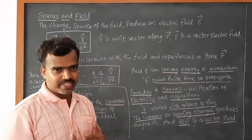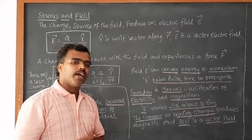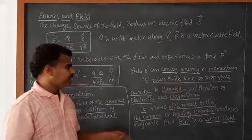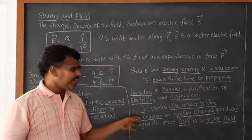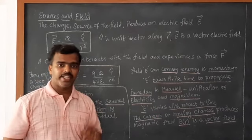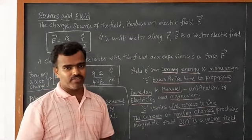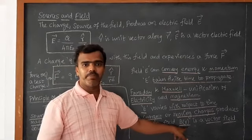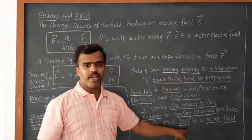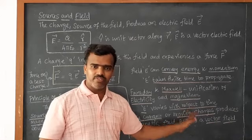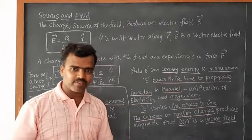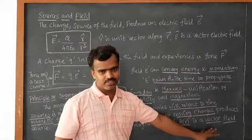So only these two persons are developing that area of Electromagnetism. Electricity and magnetism is the unification that give Electromagnetism. And the current or moving charges produces magnetic field. We are saying that B of R. That magnetic field is also a vector quantity, vector field.